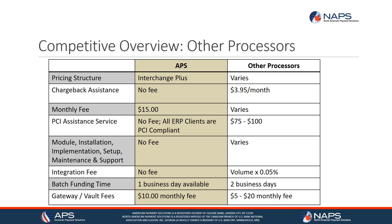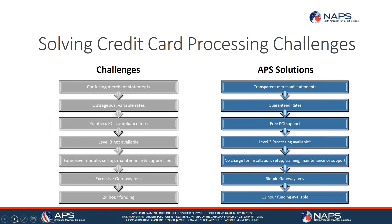On funding time: processors usually announce next-day funding meaning 24-hour funding. With us, it's 12 hours — you batch by 9 PM Eastern and funds are in your account by 8 AM. For gateway fees, we have a $10 monthly fee. Other processors we've seen can go as high as $20 per month. Keep all of these little savings in mind.